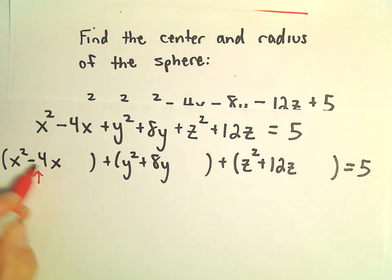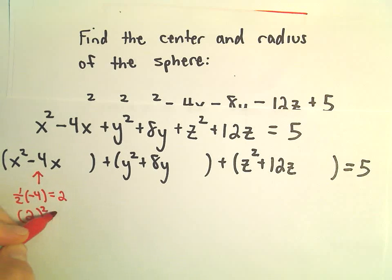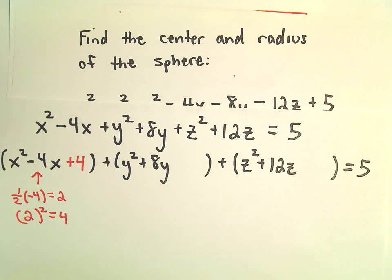We take the coefficient in front of x, which is just negative 4. I take one half of that coefficient, that's going to give me positive 2. I square it, which is going to give me a 4, and I just throw a plus 4 in the parentheses.